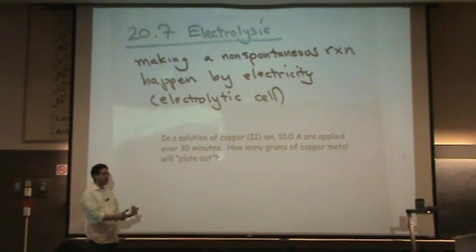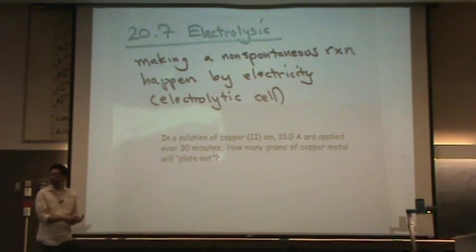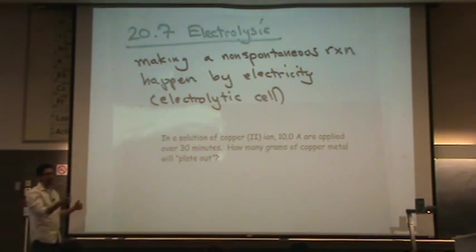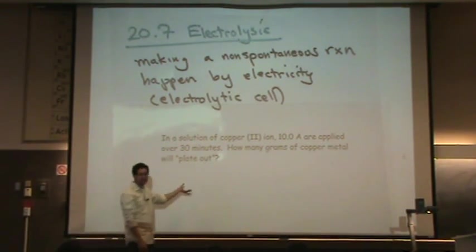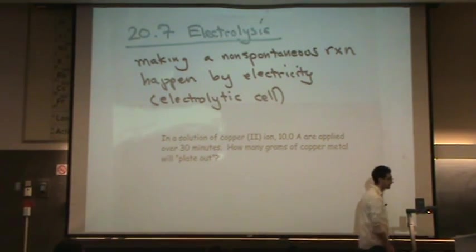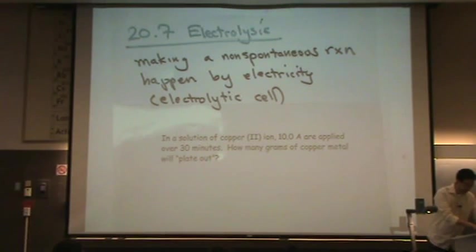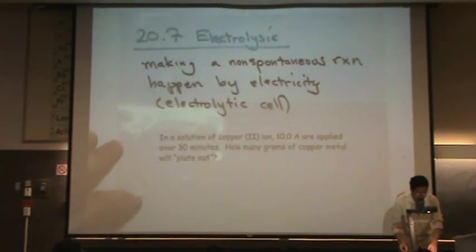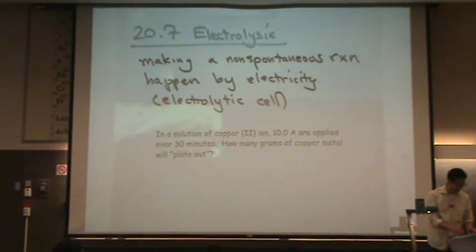And the way you do that is putting in a current. So you put in a certain current over a period of time you can force something to plate out. And this example here we are going to do is actually an industrial process. So I'll show you how this works. It's actually a pretty simple little calculation to figure out how this process goes.